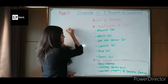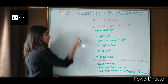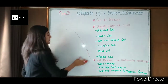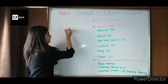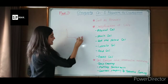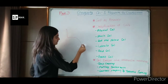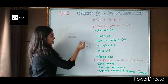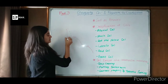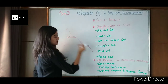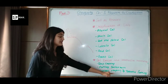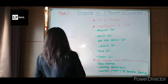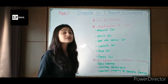Terrace farming means that on mountains, when water flows it washes the soil away. But if you make steps on the mountain, the water will stay on each step instead of flowing all the way down. This step formation is known as terrace farming and is mostly present in mountainous regions.